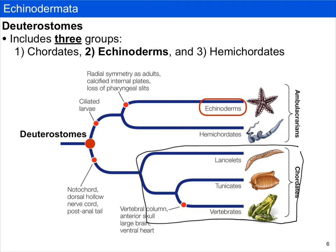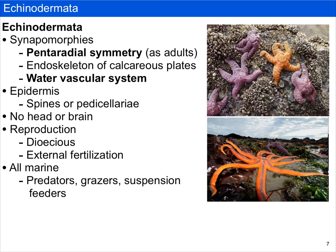Echinoderms are unusual animals in many respects. They mostly have pentaradial symmetry as adults, while the larvae are bilaterally symmetrical and go through a complex metamorphosis. They have an endoskeleton of calcareous plates and a water vascular system. Their epidermis is often covered in spines or modified pinching organs called pedicellariae. There is no head or brain, but they do have an extensive nerve net with many neurons, and all of their tube feet are under neuronal control — they are quite neurologically complex.